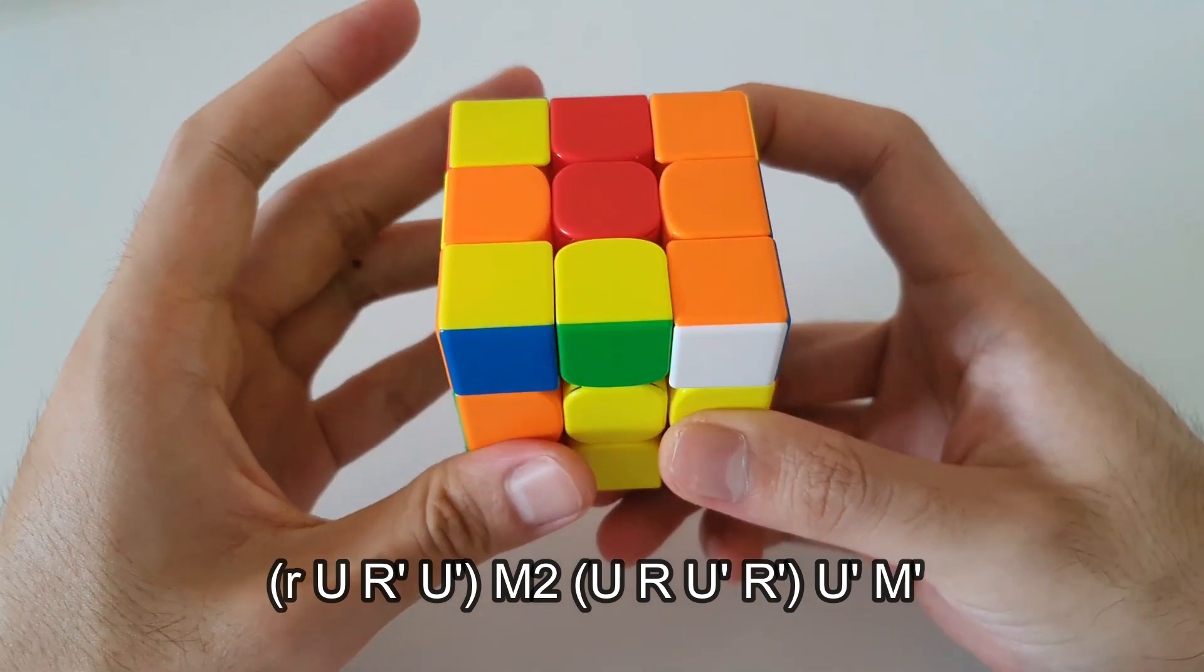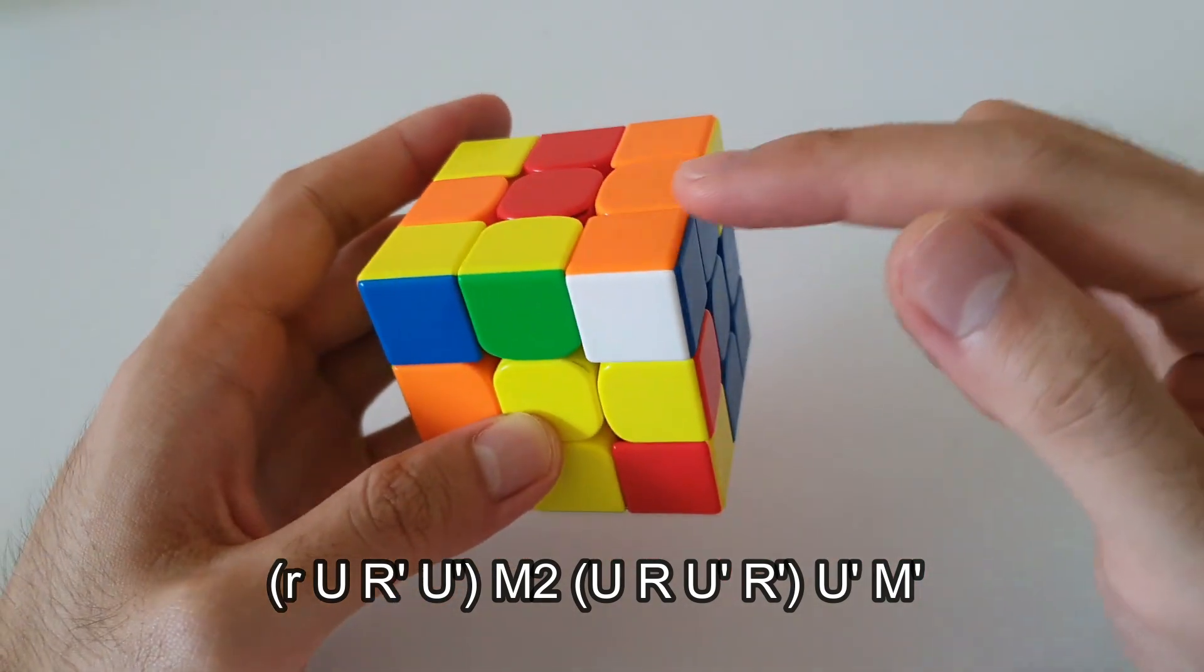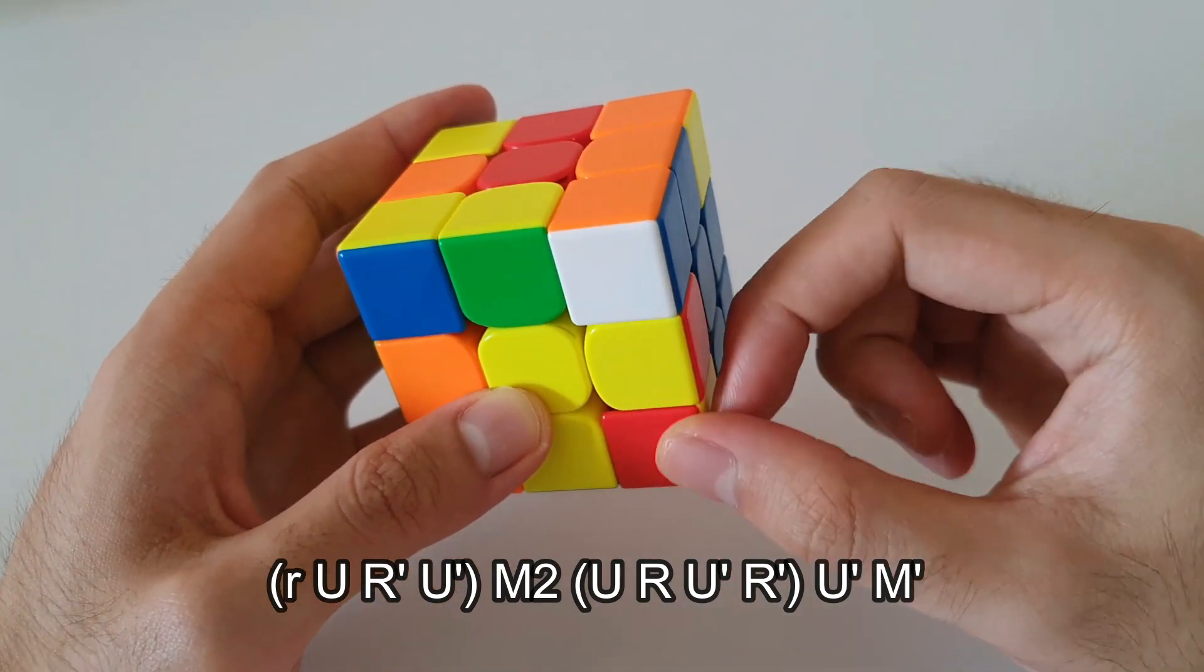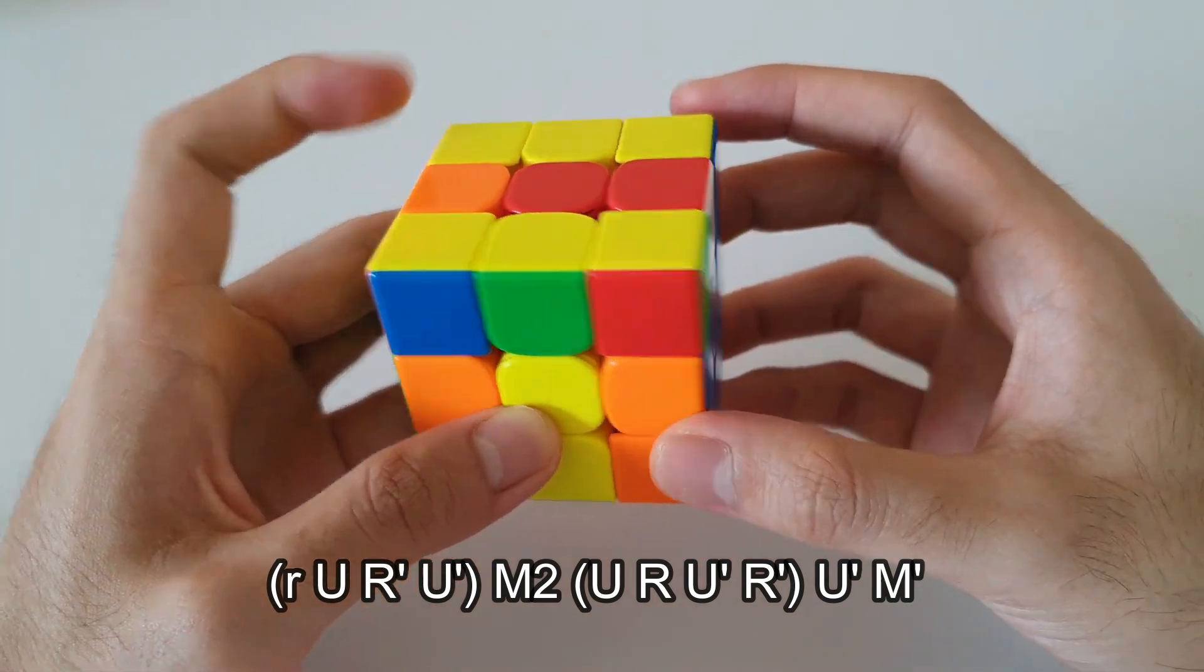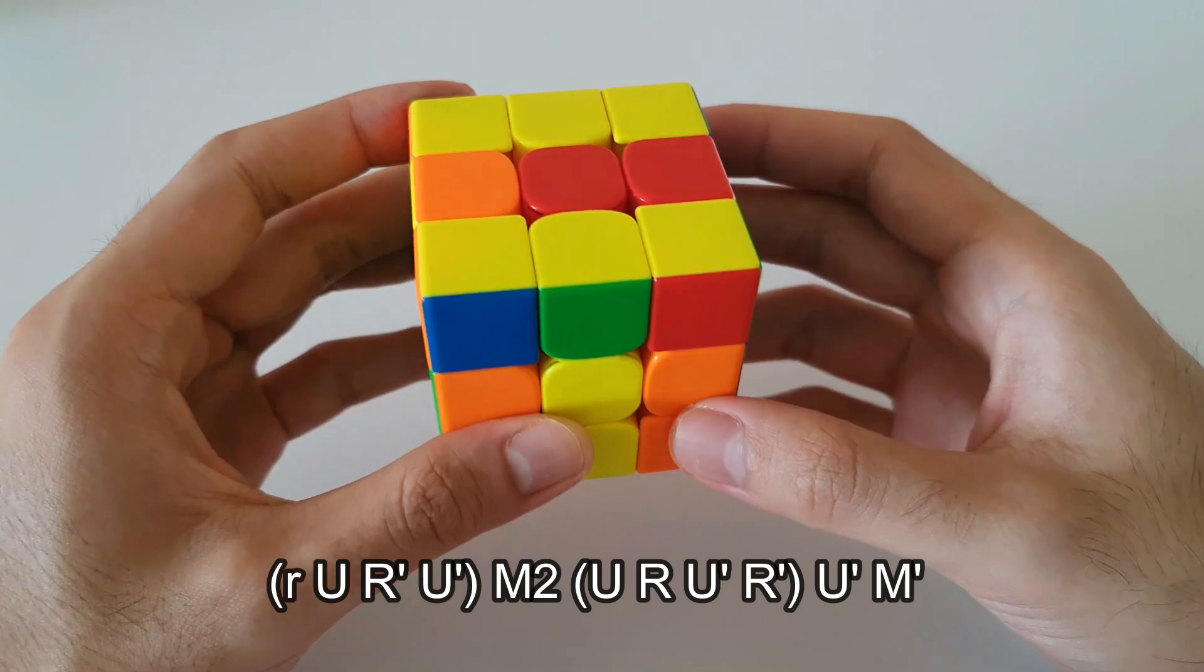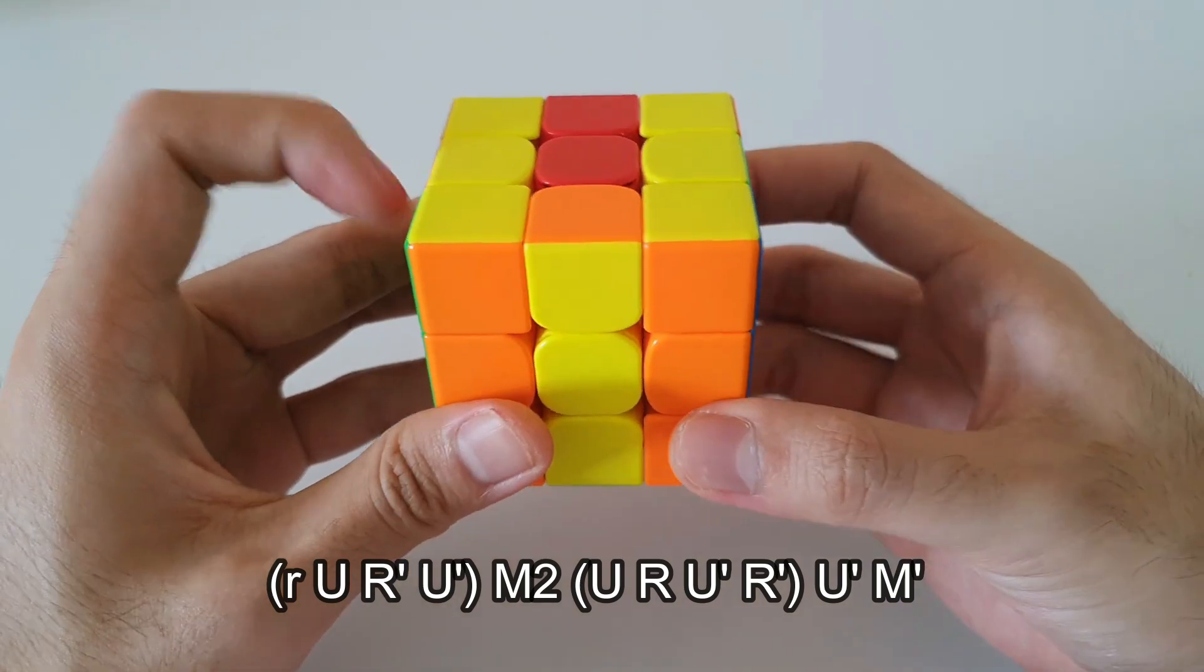So it starts off with a wide R move, followed by the rest of the sexy. M2. Now we want to kind of think of inserting this F2L pair into this slot. Like this. And then finally just match up the colors. So U' M'.